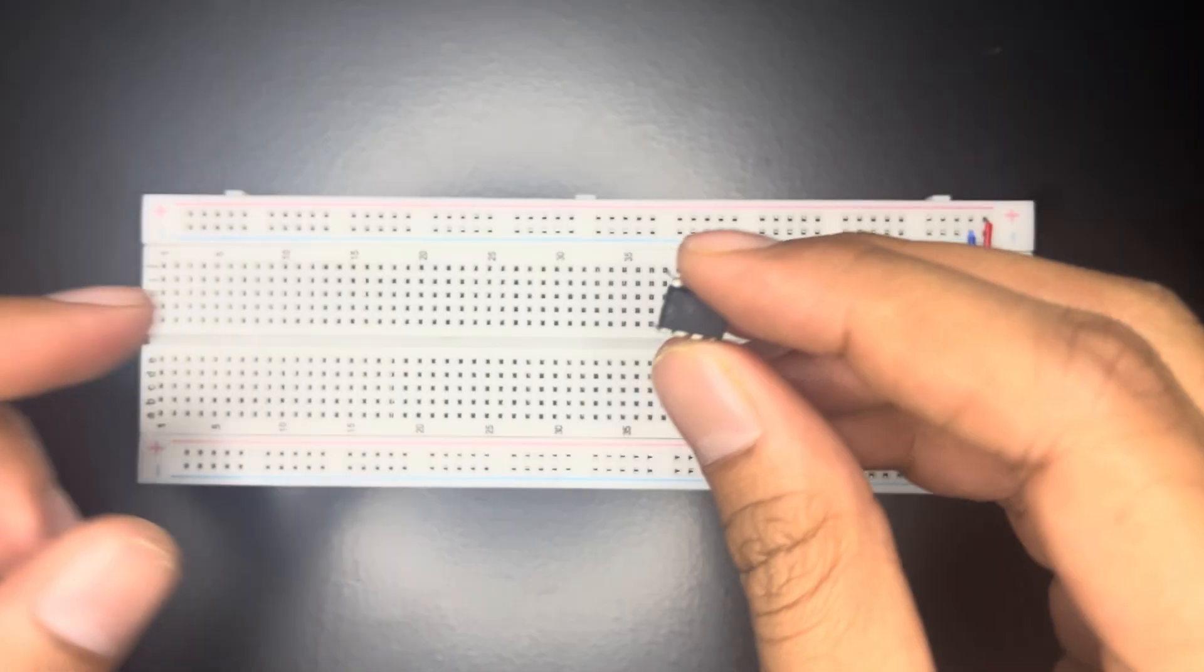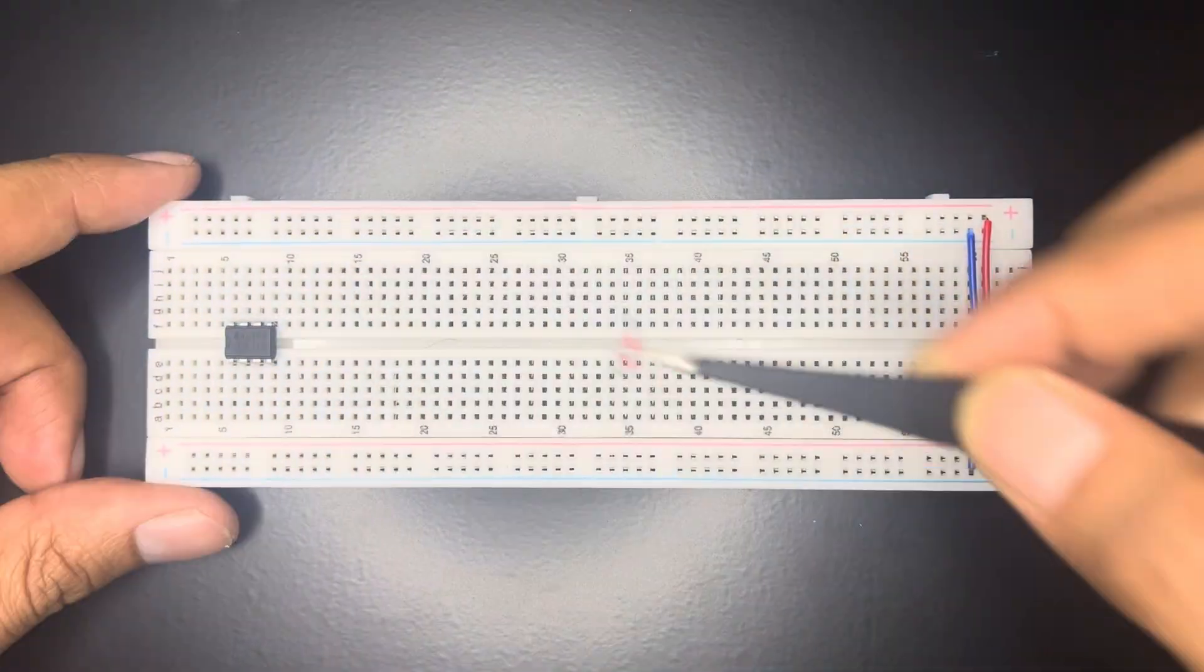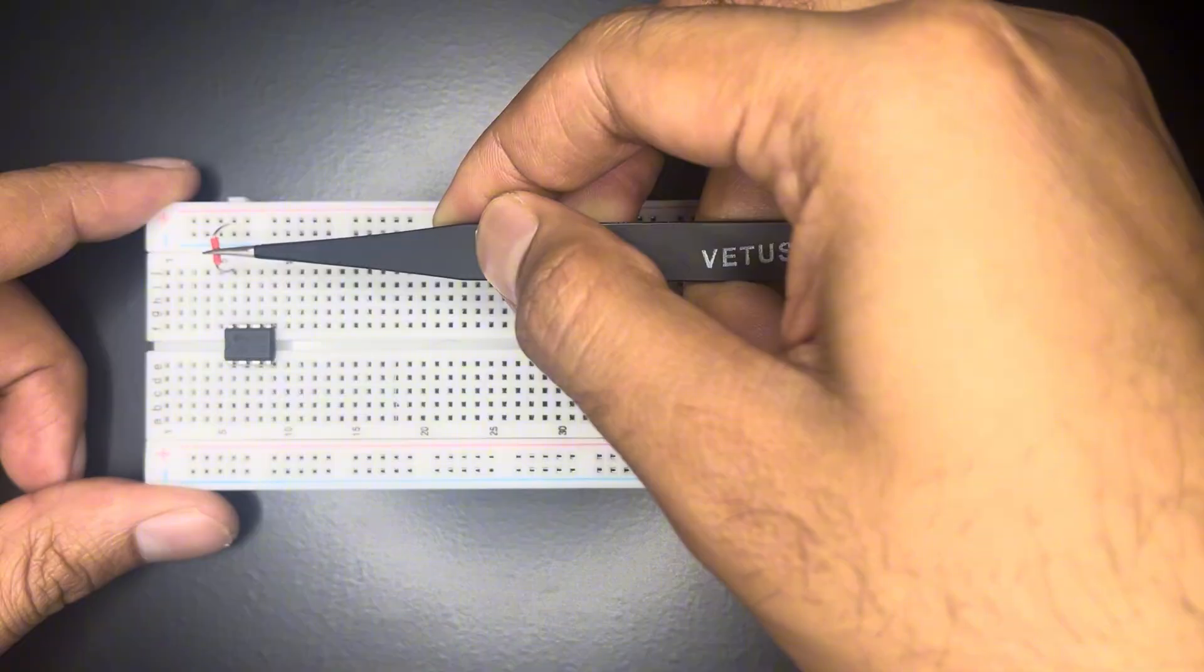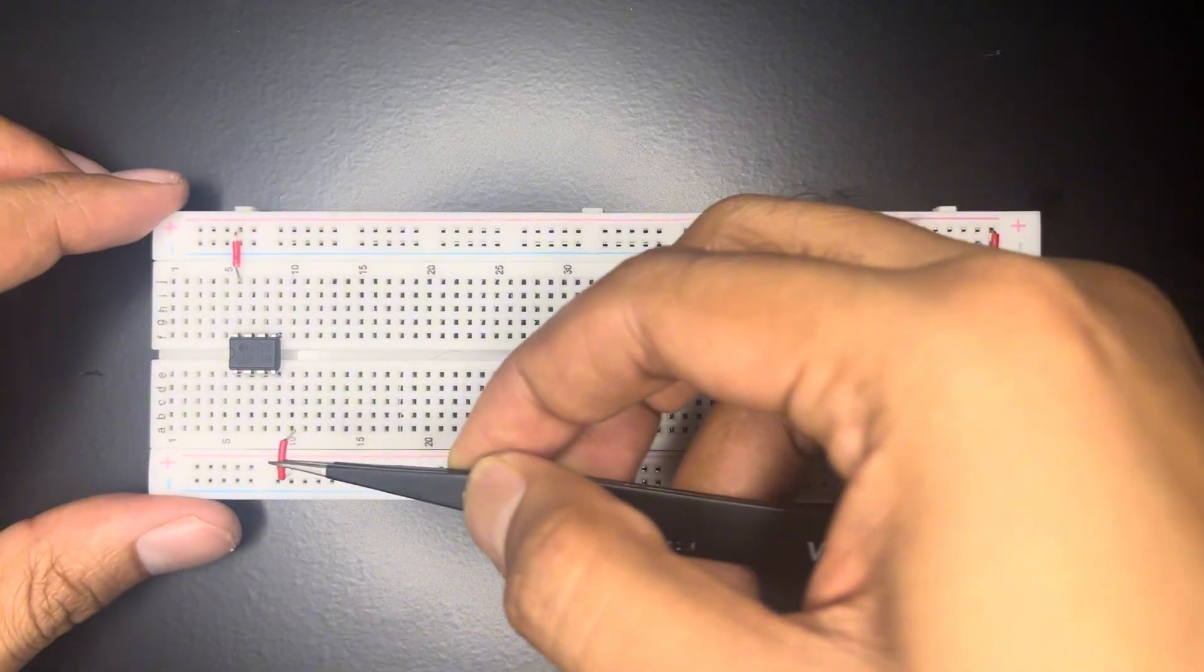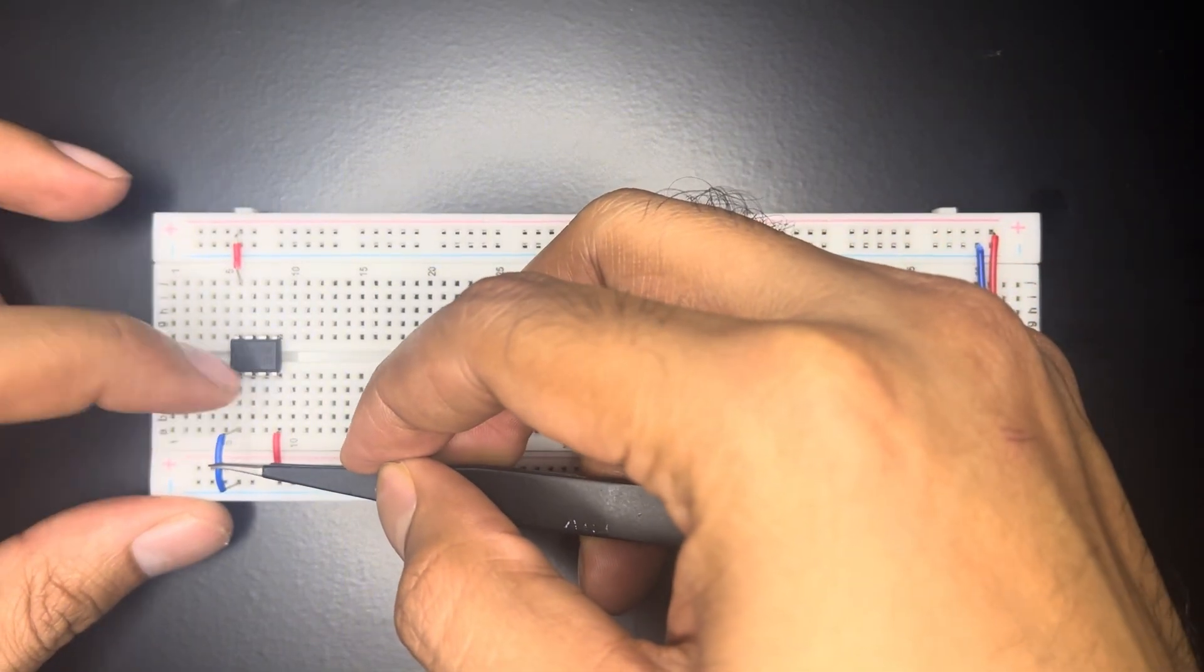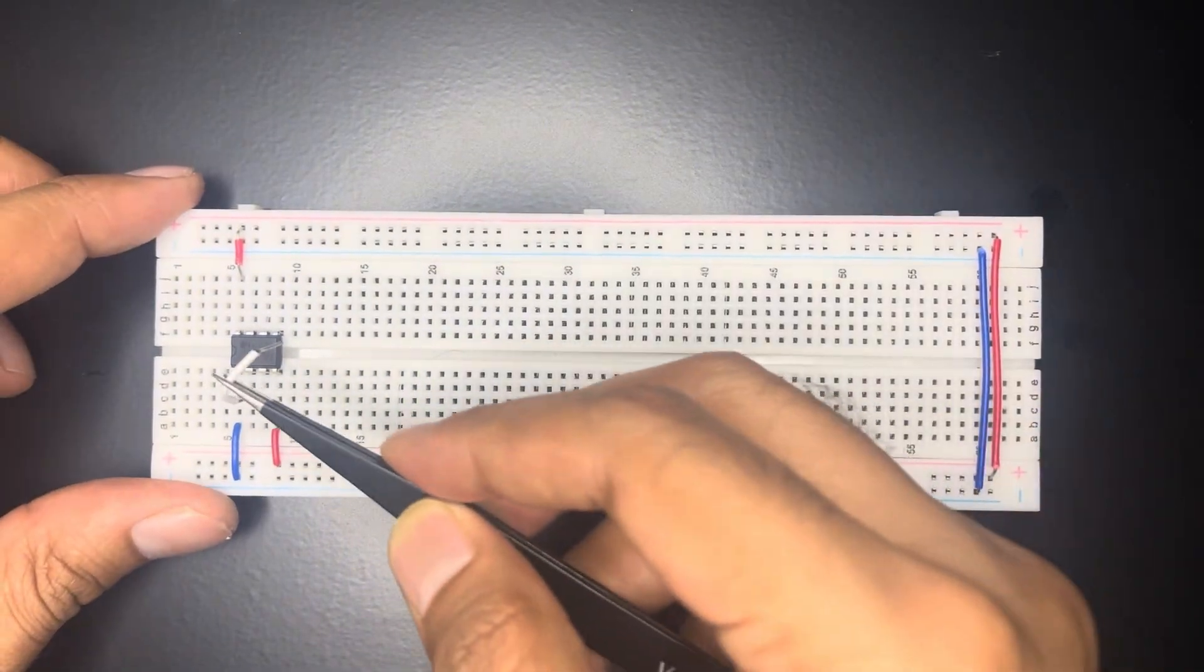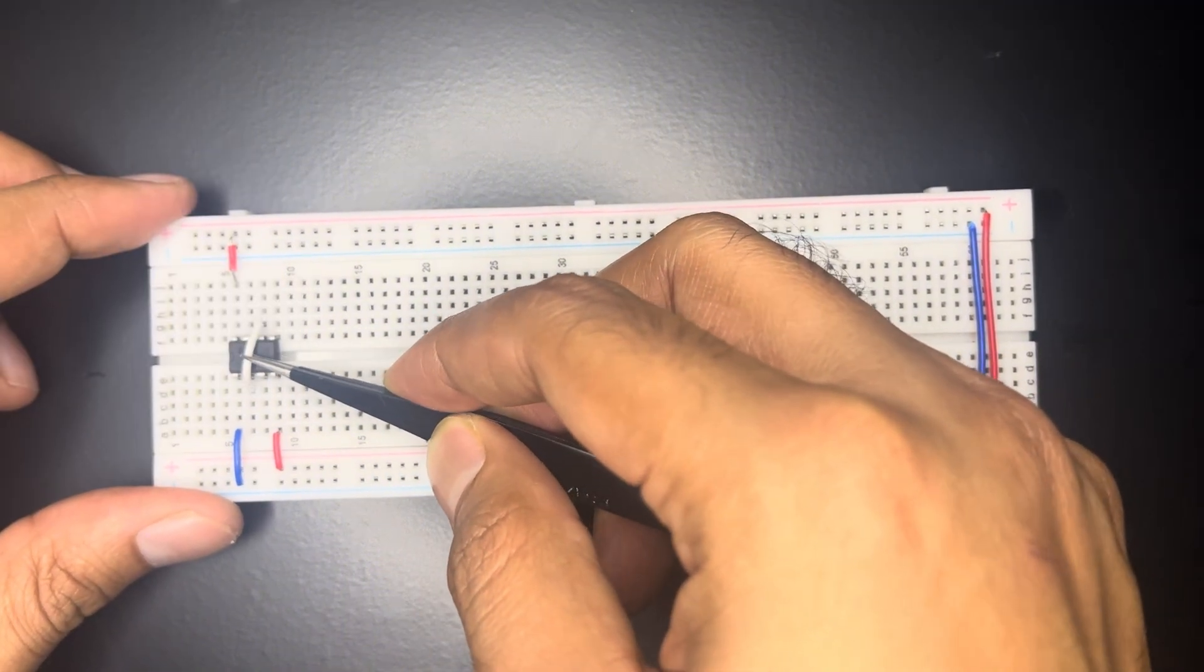Keep the 555 IC notch on the left and place onto the breadboard. Pin 8 connected to 9V, it powers the timer IC. Pin 4 reset pin is connected directly to 9V. Pin 1 is connected to ground. Pin 2 trigger and pin 6 threshold are connected together.